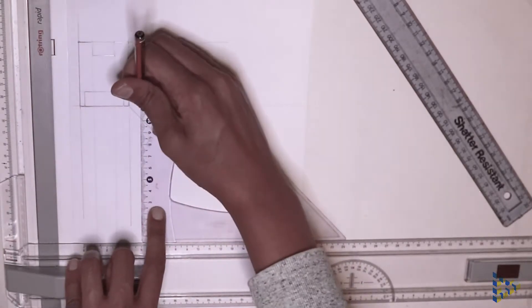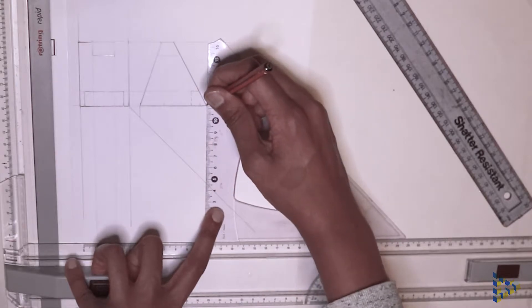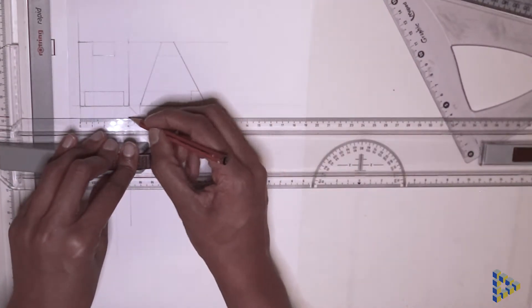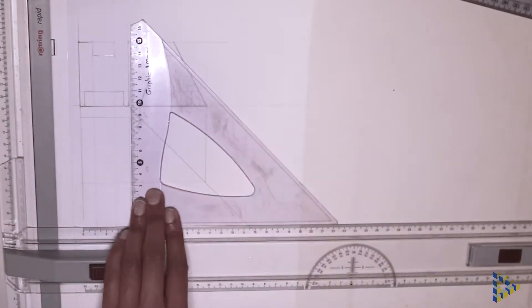Once the lines from the left side view touch the diagonal, project the lines horizontally across. These points from both views meet each other and give us the length of our drawing.